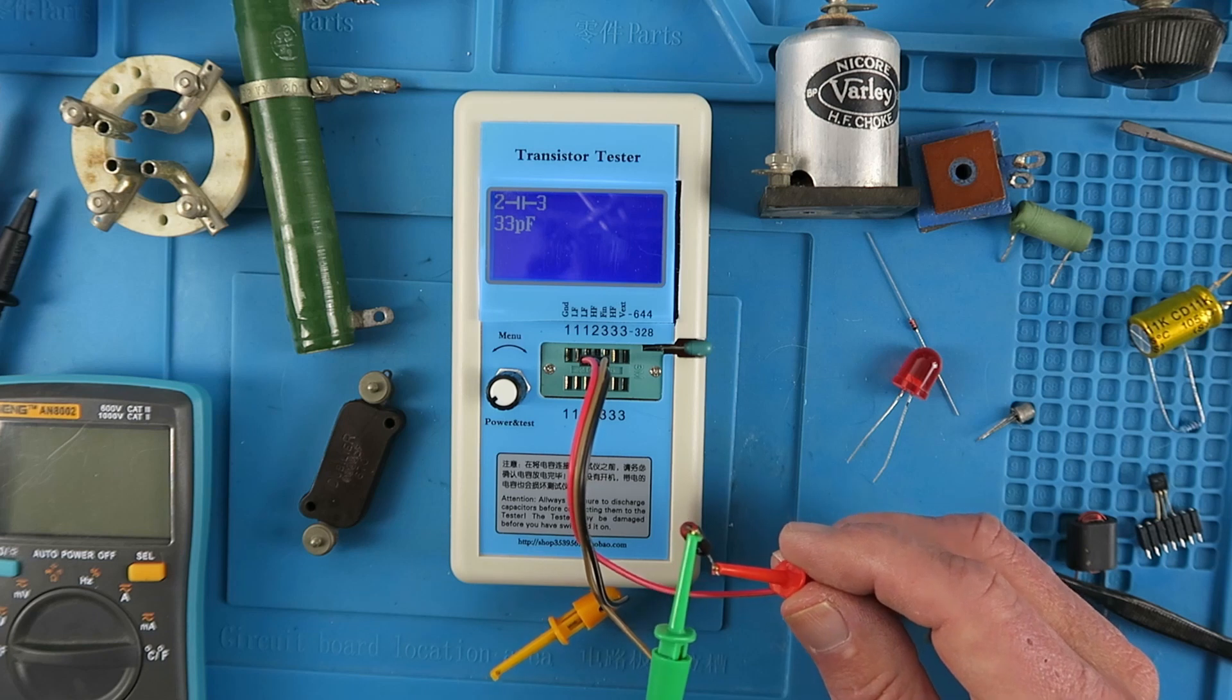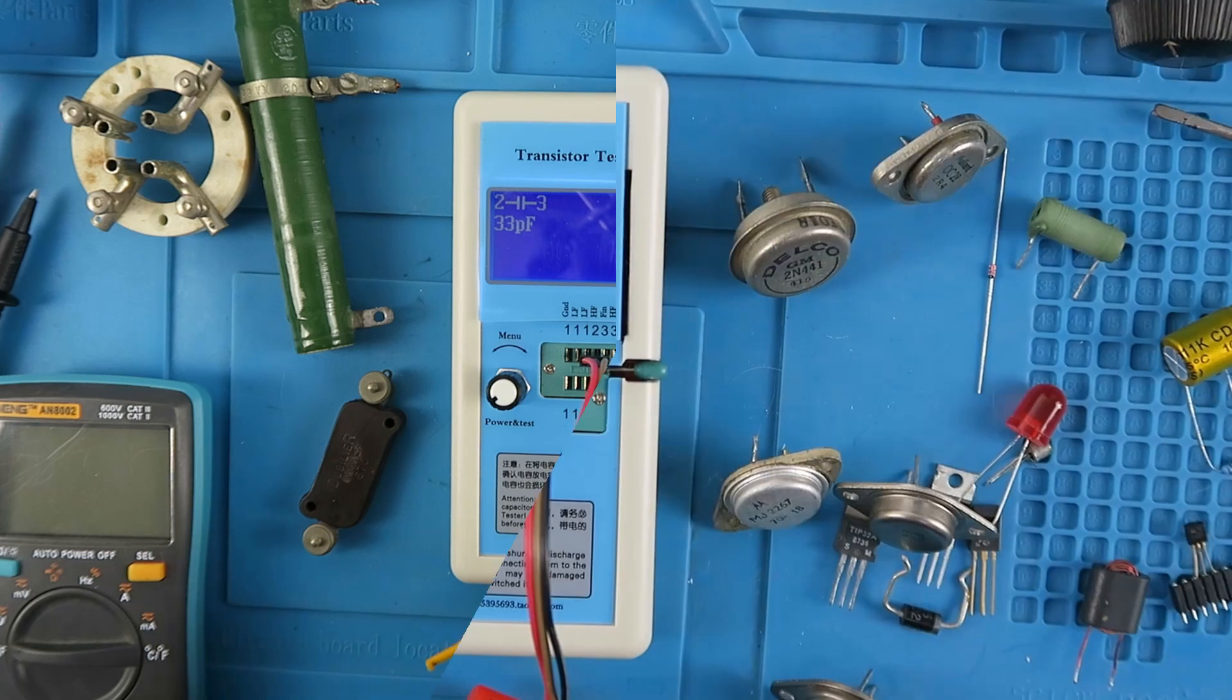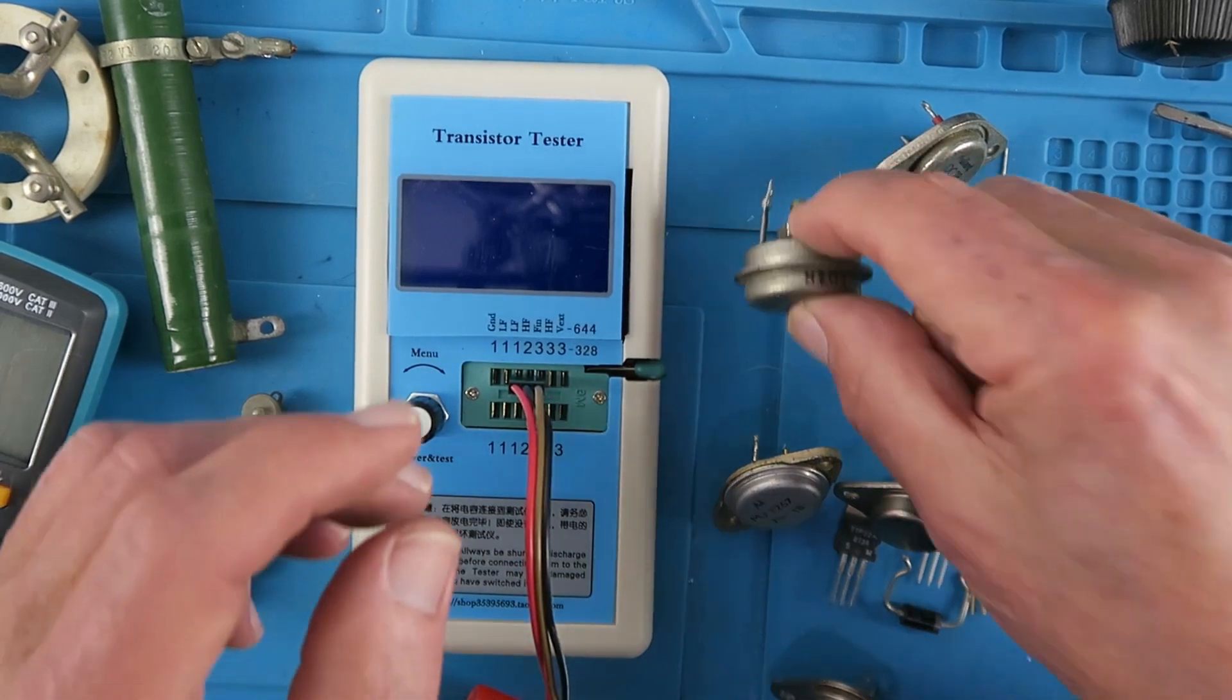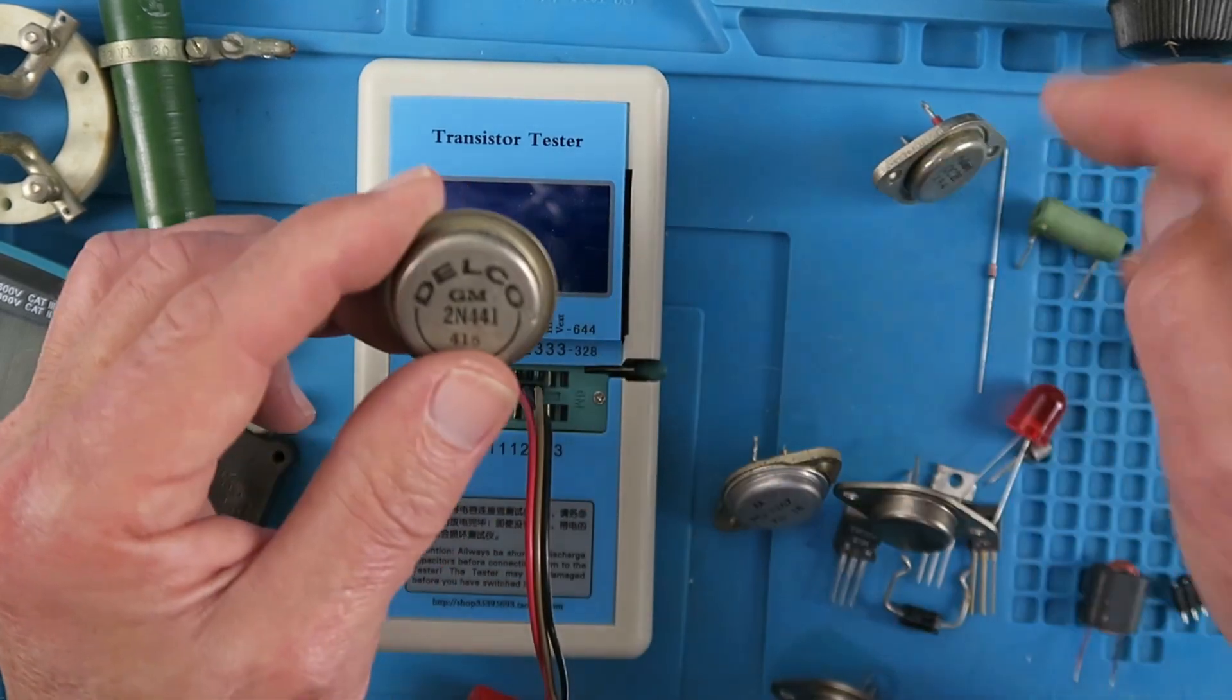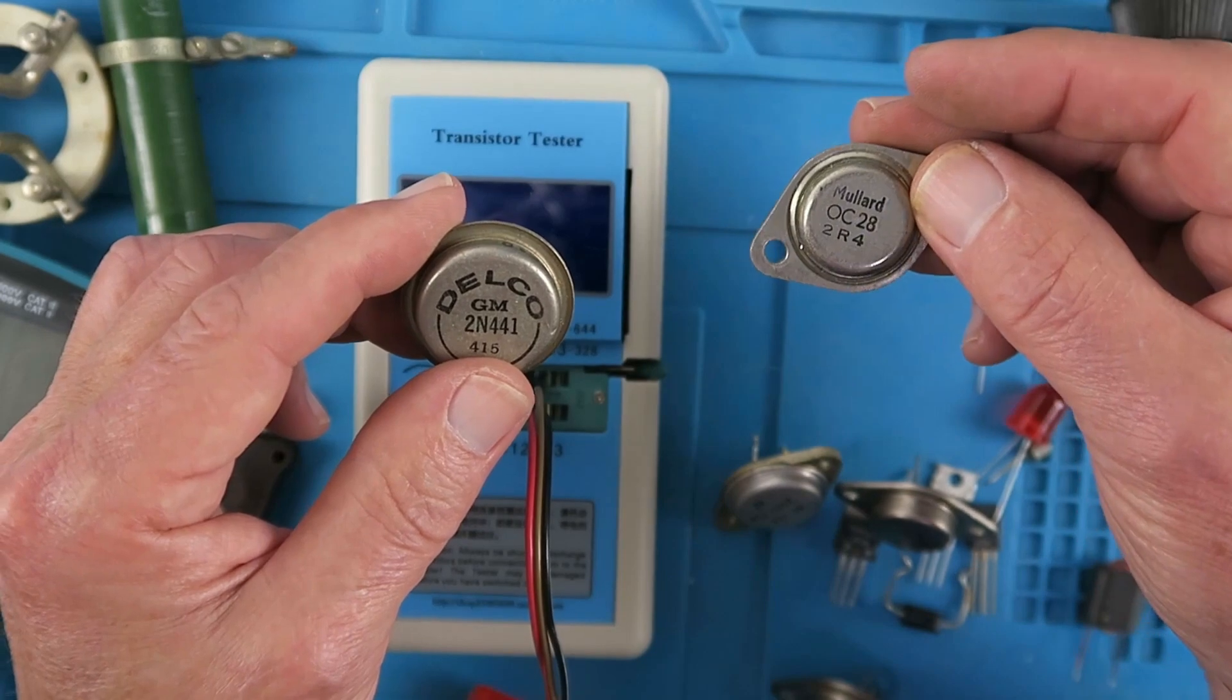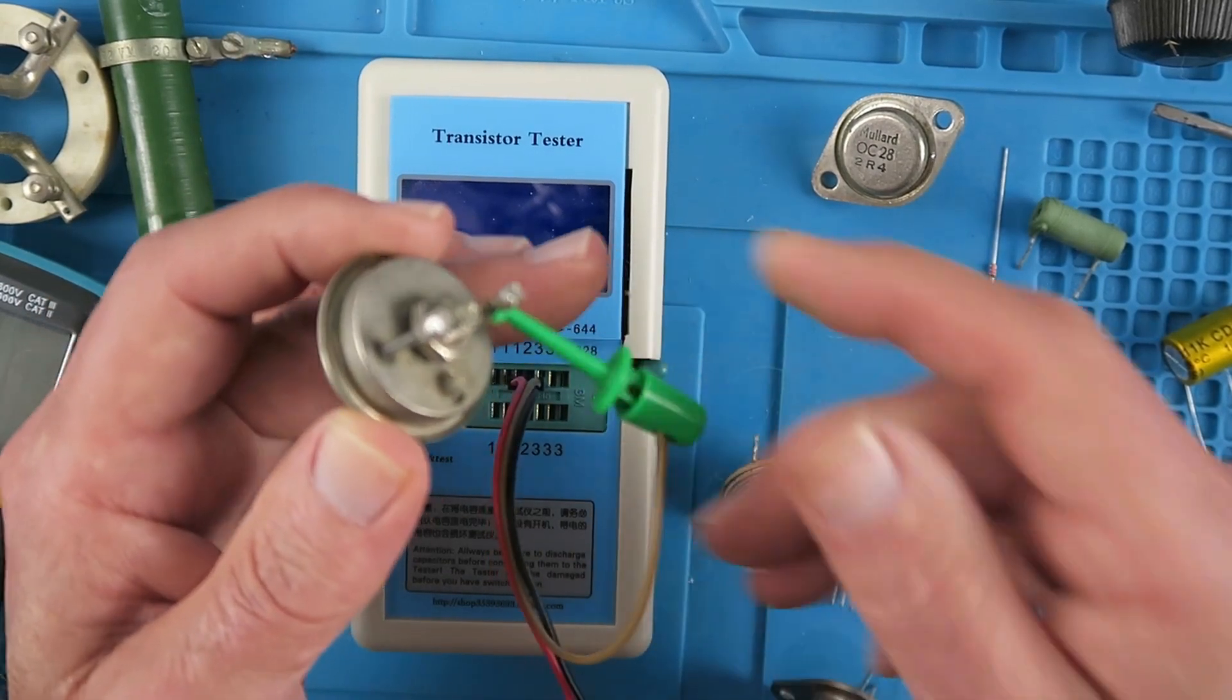Even straight from the freezer, the germanium diode still only appears as a capacitor. Never mind. I've dug through my collection of old transistors and found a couple to test. And we can see what the tester makes of these. I know that these two are germanium, another good old Mullard OC28 there. And DILCO. So let's connect this guy up, for example.